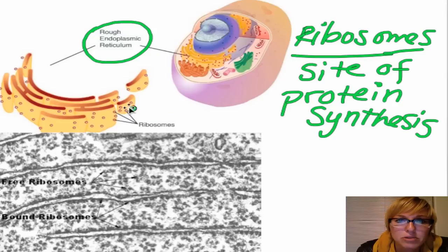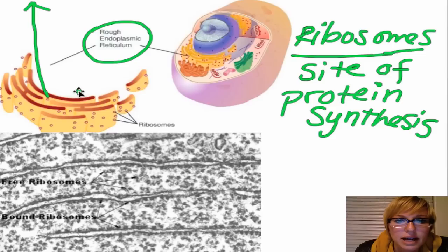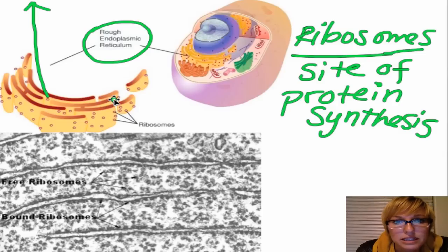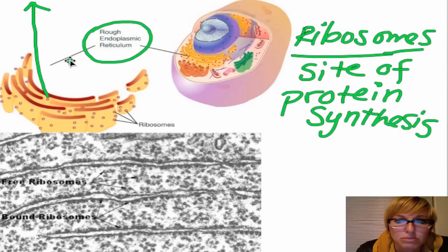Our bound ribosomes found on the rough endoplasmic reticulum produce proteins that are actually exported from the cell. So any proteins made from ribosomes attached to the rough ER are made to leave the cell. An example: your pancreatic cells have a rough endoplasmic reticulum that produces a protein called insulin. Insulin helps to regulate the sugar levels in our blood, so the protein insulin is made at the rough ER and then excreted into the bloodstream where it can effectively work to control our blood sugar levels.